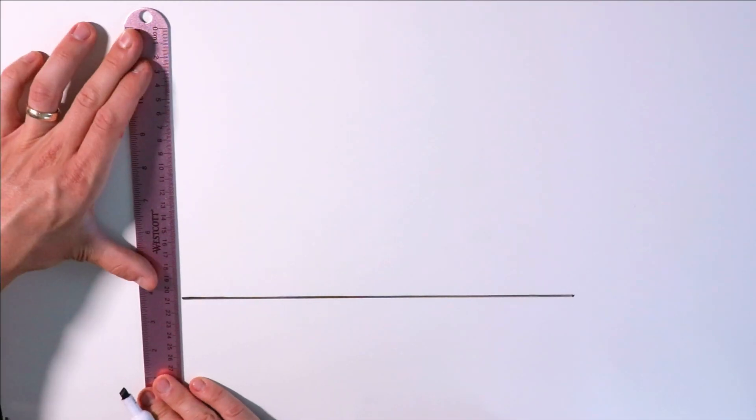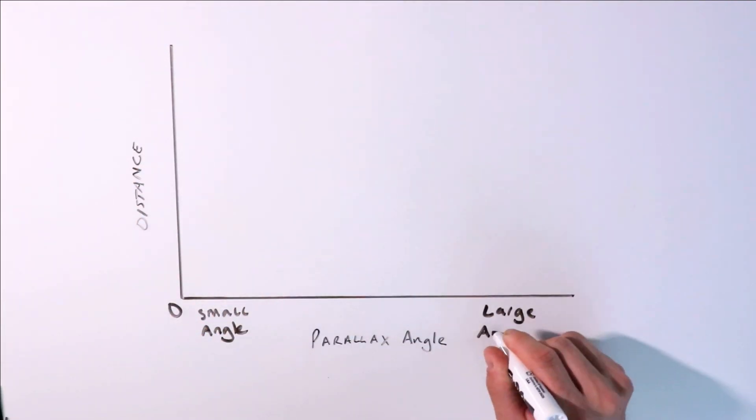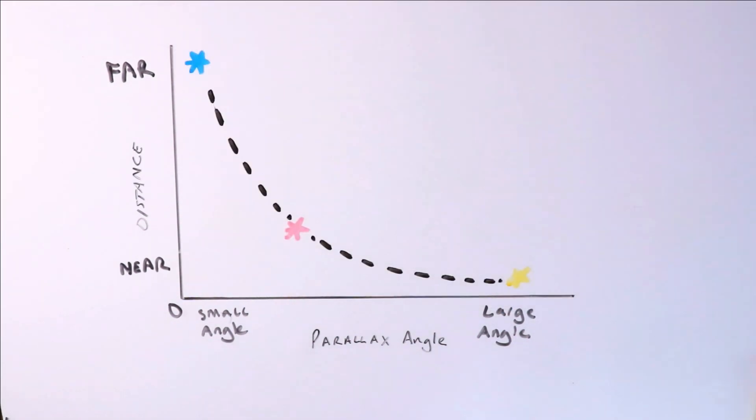What we want to be able to do next is calculate a star's distance from Earth in parsecs. Let's analyze the results from our parallax model. We observed that a star's distance is inversely proportional to the amount of parallax that we observe.